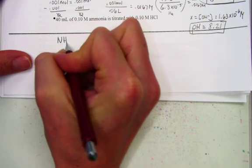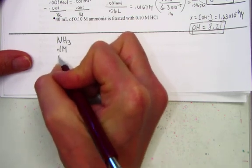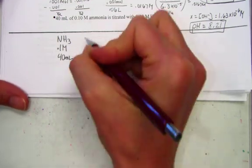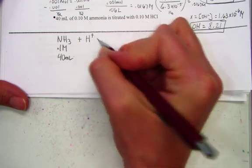Here we have a weak base, ammonia, with a concentration of 0.1 molar and a volume of 40 mls being titrated against a strong acid, HCl.